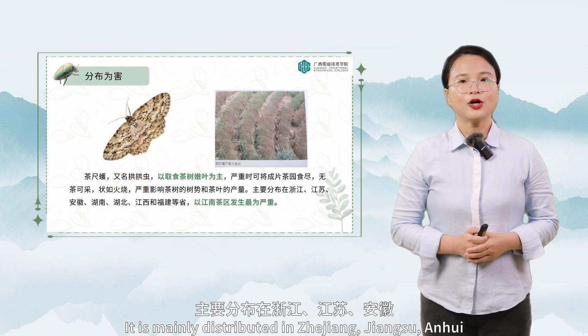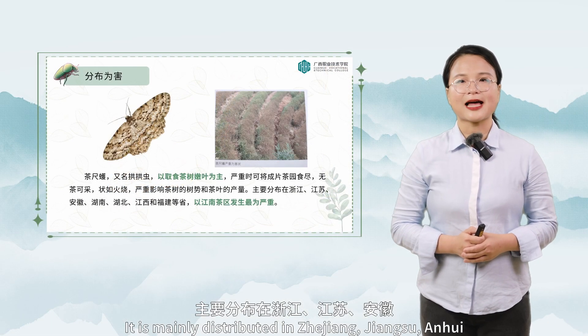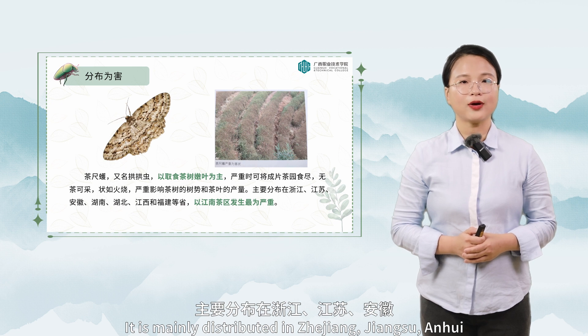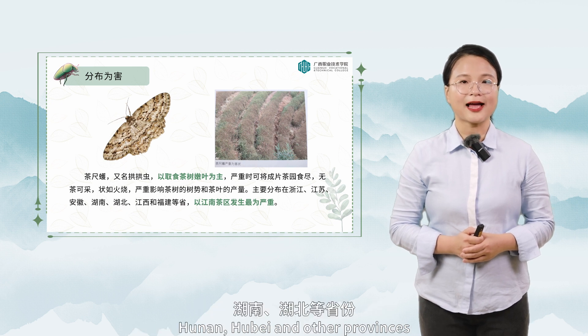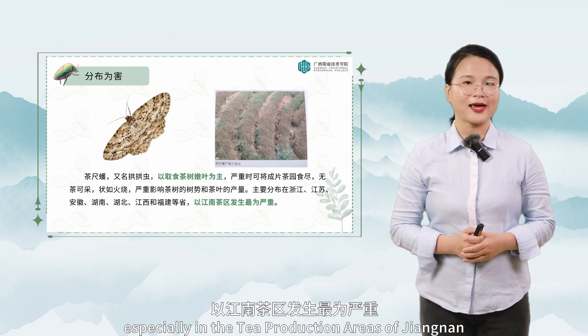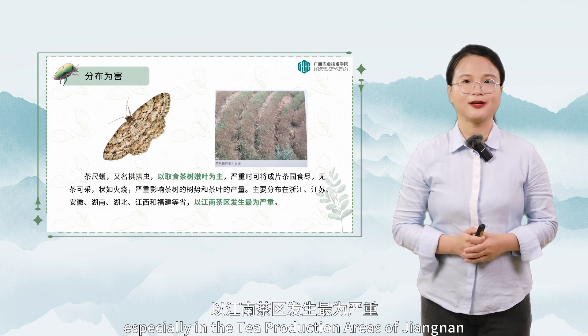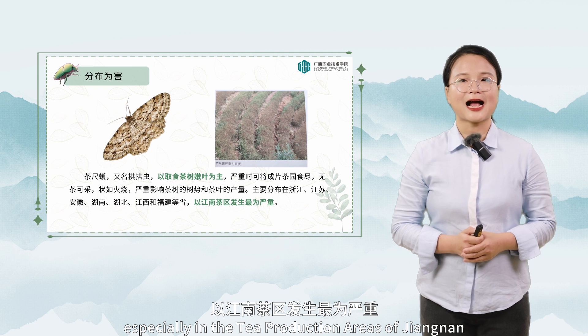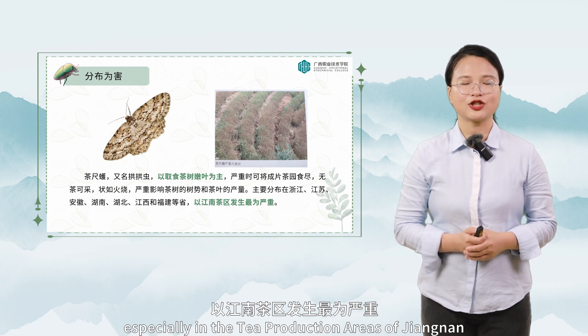Tea inchworm is mainly distributed in Zhejiang, Jiangsu, Anhui, Hunan, Hubei, and other provinces, especially in the tea production areas of Jiangnan.